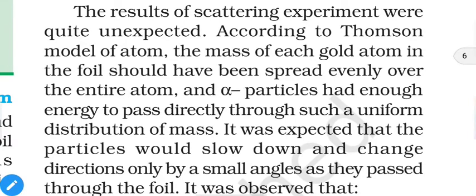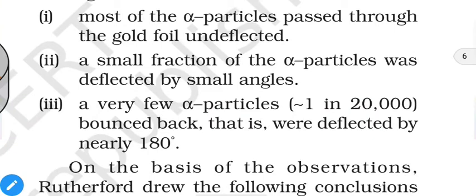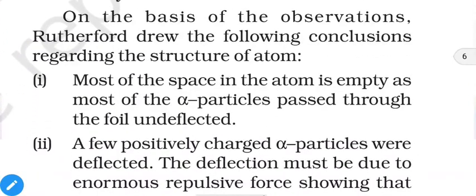According to Thomson's model, the mass of each gold atom should have been spread evenly over the entire atom, and the alpha particles had enough energy to pass through such a uniform distribution of mass. It was expected they would slow down and change direction by only a small angle. It was observed that most passed through undeflected, a small fraction was deflected by a small angle, and very few — one in 20,000 — bounced back, deflected by nearly 180 degrees.